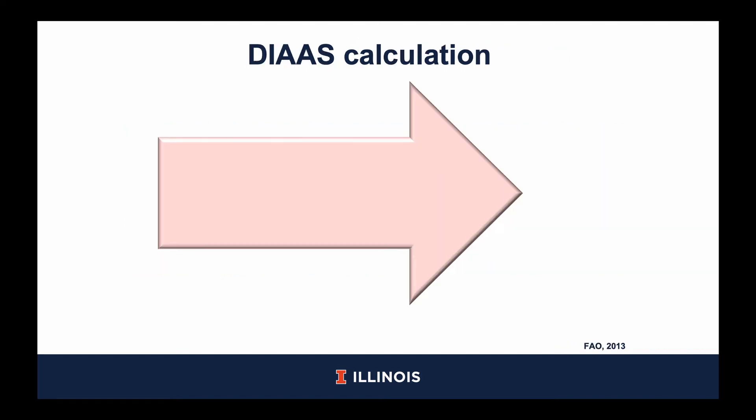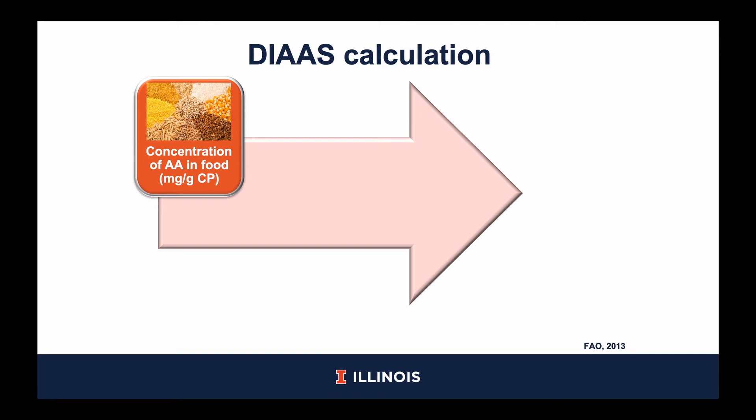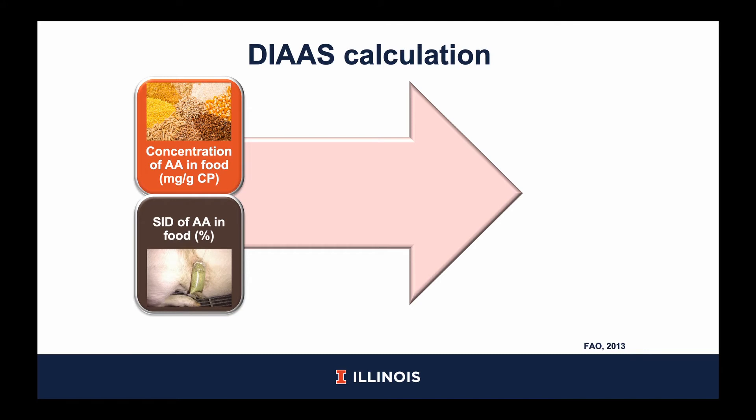Now let's move on to how we actually calculate DIAAS. First, we analyze the concentration of amino acids in the test ingredient. Then, as previously explained, we feed this test ingredient to a cannulated pig and collect the ileodigesta. This ileodigesta is then analyzed for amino acids to enable the calculation of standardized ileal digestibility, or SID, of amino acids in the test ingredient. These two steps complete the lab and animal work that is required for DIAAS.